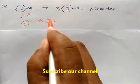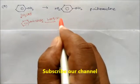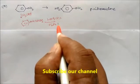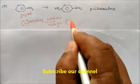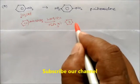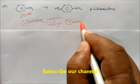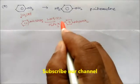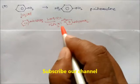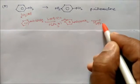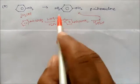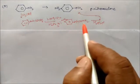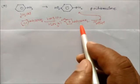Now you can do nitration: concentrated HNO3 in presence of H2SO4 at 15 degrees centigrade. In this case, NO2 will attack only the para position. You get para-nitro acetanilide, with NHCOCH3 and NO2. Then acidic hydrolysis gives para-nitroaniline, releasing acetic acid.